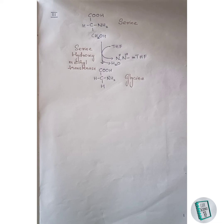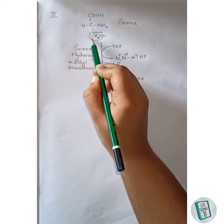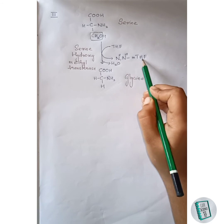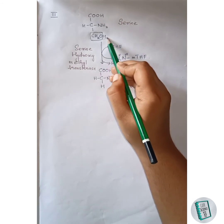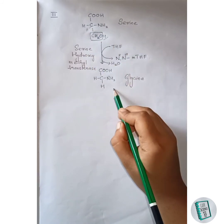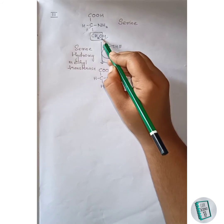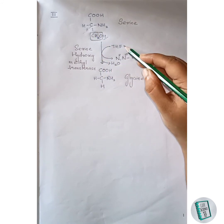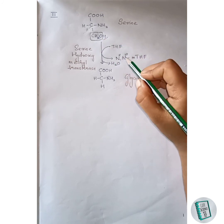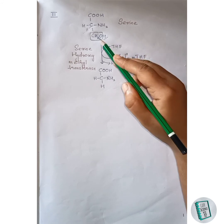Now let us move on to the second degradation pathway of serine. Here, serine in the presence of serine hydroxymethyl transferase gets converted to glycine. Tetrahydrofolate (THF) comes and accepts the CH2OH group of serine and leaves as N5,N10-methylenetetrahydrofolate. The remaining hydrogen joins with this carbon, forming a CH bond, and this portion leaves as glycine. The CH2 group gets incorporated between N5 and N10 of the THF molecule, forming N5,N10-methylene THF.